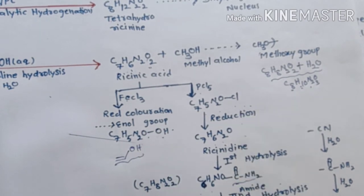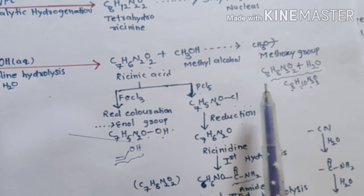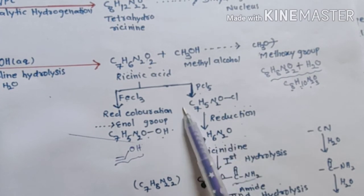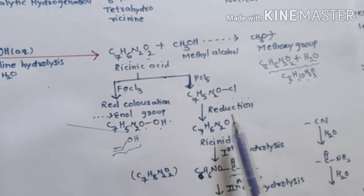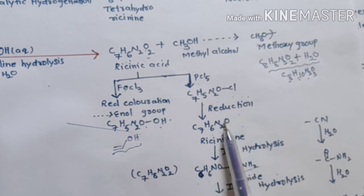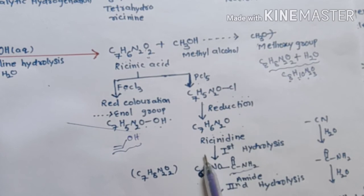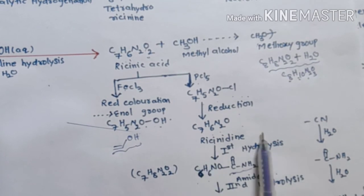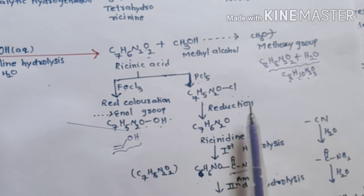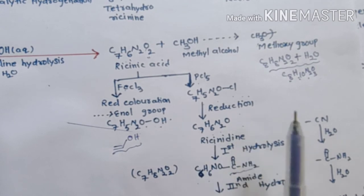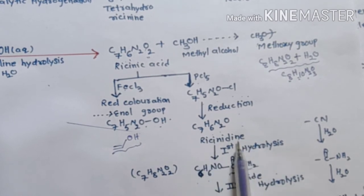When this chloro derivative is subjected to reduction, we get another compound known as resinidine. The formula of resinidine is C7H6N2O.